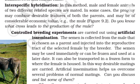Interspecific hybridization. In this method, male and female animals of two different related species are mated. In some cases, the progeny may combine desirable features of both the parents and may be of considerable economic value — for example, the mule, produced by crossing a male donkey and a female horse. Control breeding experiments are carried out using artificial insemination. The semen is collected from the male chosen as parent and injected into the reproductive tract of the selected female by the breeder. The semen may be used immediately or frozen and used at a later date, and can also be transported in frozen form to where the female is housed.